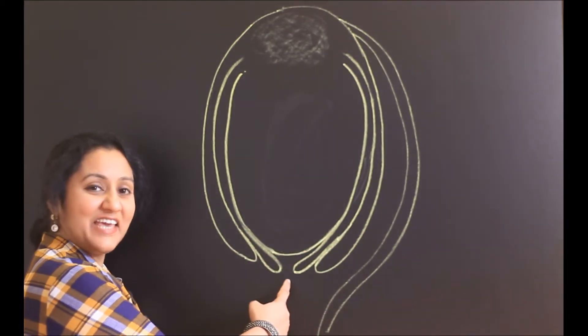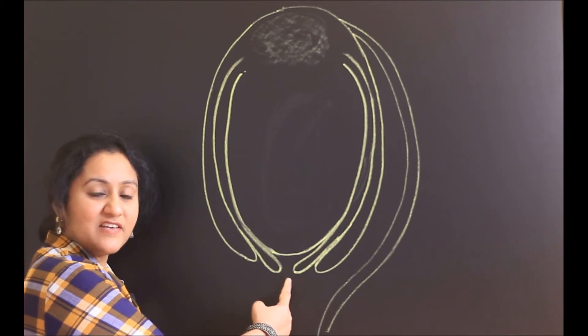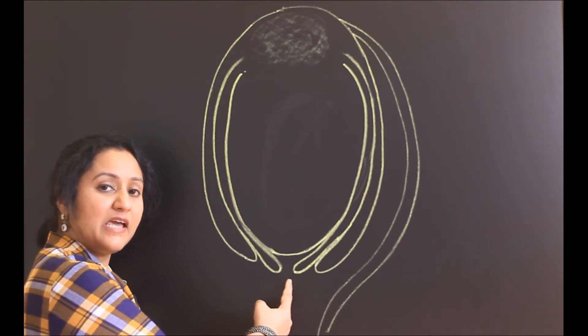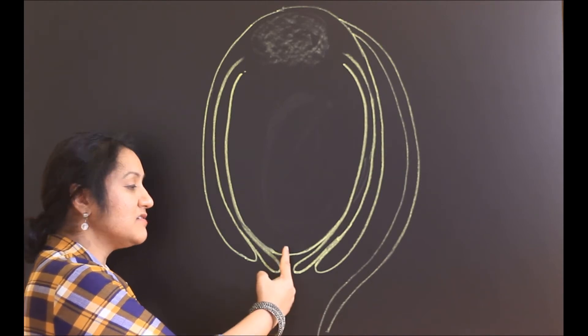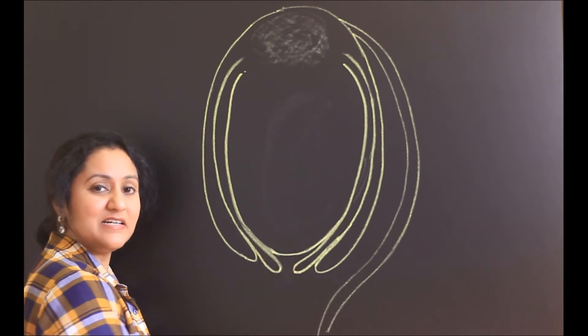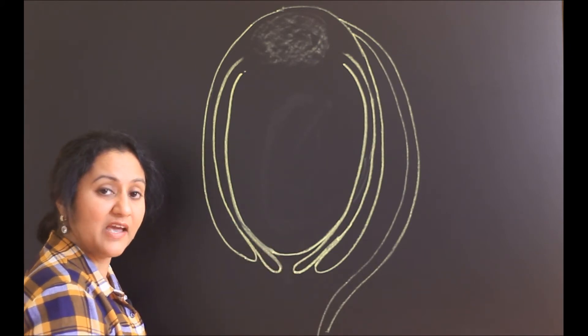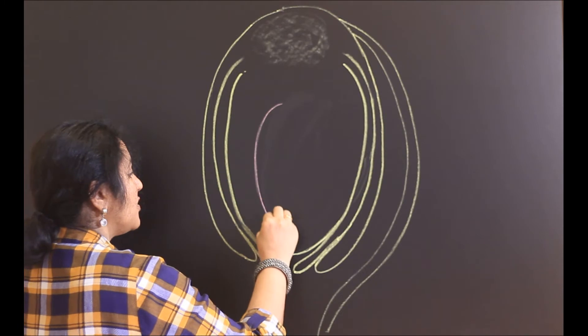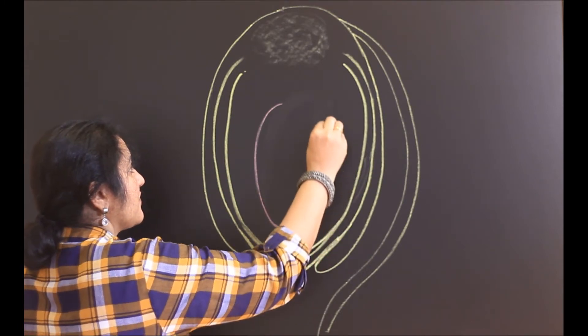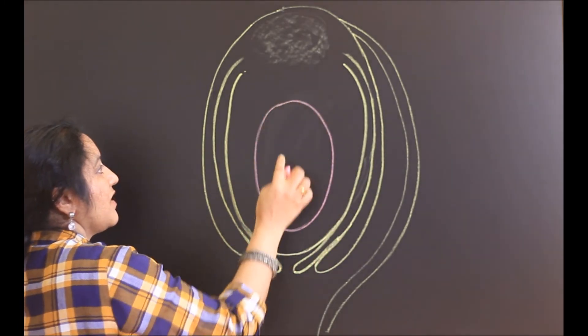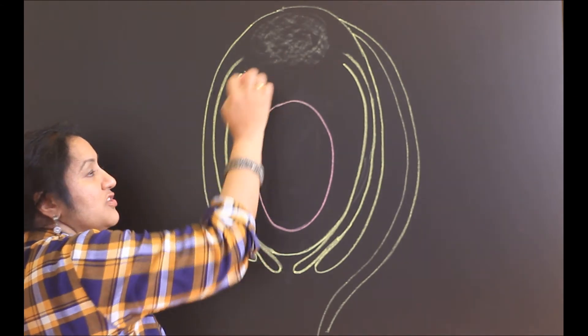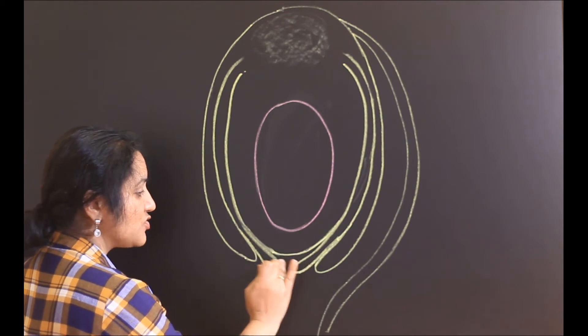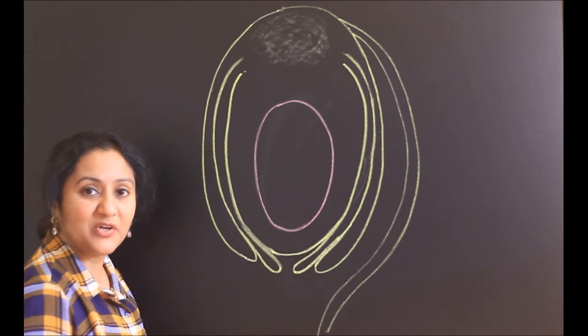You can see a gap between the inner integuments. This gap is called as micropyle. What is the use of micropyle? This is the area through which the pollen tube enters into the embryo sac to release the pollen grains. Here there should be an embryo sac and embryo sac is oval in shape. Let's draw this oval shaped embryo sac here. This part of the embryo sac near to the chalaza area is called as chalaza region and this part close to the micropyle is called as micropyle region.